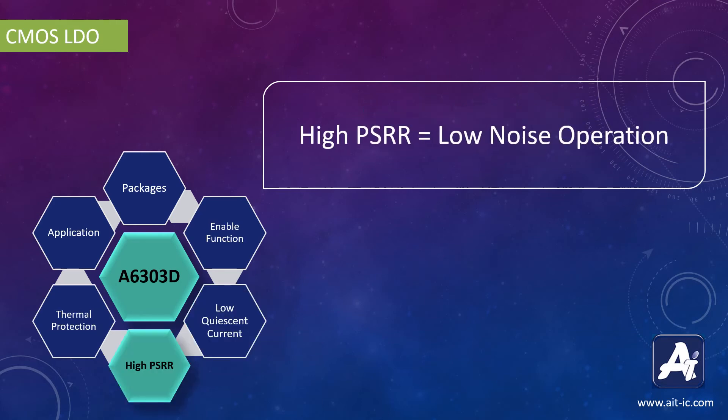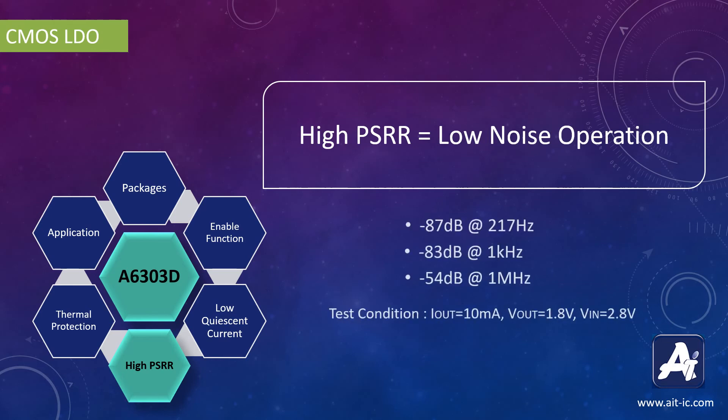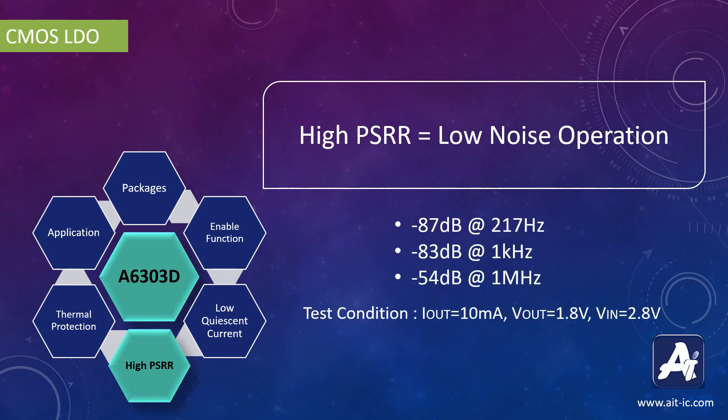A6303D has a high power supply rejection ratio and is compatible with low ESR ceramic capacitors, which gives added output stability. The external capacitors used with this IC must be carefully selected. Any good quality ceramic or tantalum capacitors can be used. An output capacitor of larger capacitance can reduce noise and improve transient response stability and PSRR. These are the power supply rejection ratios of A6303D at different frequencies.